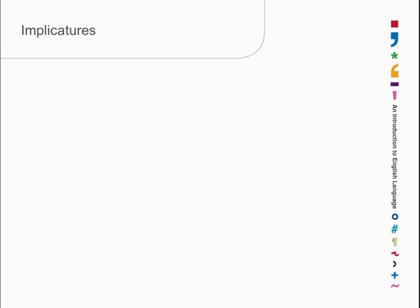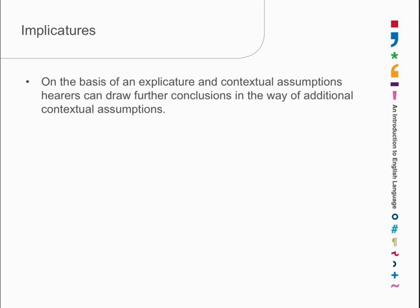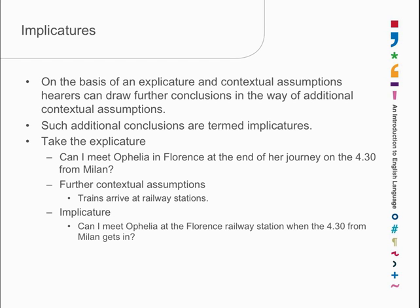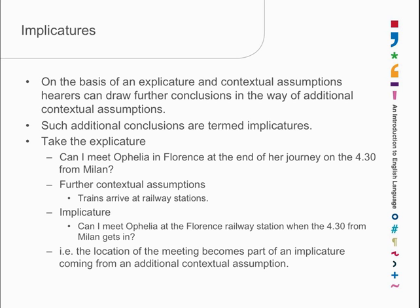Relevance theorists also talk about there being further propositions which can be inferred on the basis of an explicature plus additional contextual assumptions. These are termed implicatures because they're implied. Take the previous case: I can meet Ophelia in Florence at the end of her journey on the 4.30 from Milan, and the assumption that trains arrive at railway stations. She hasn't explicitly asked me to meet her at the railway station, but there's a further contextual assumption that enables me to draw the implicature that I should meet her at the Florence railway station at 4.30. So the location of the meeting becomes part of an implicature coming from an additional contextual assumption.